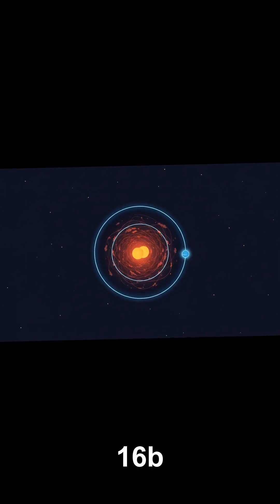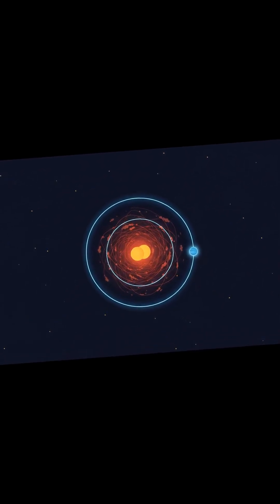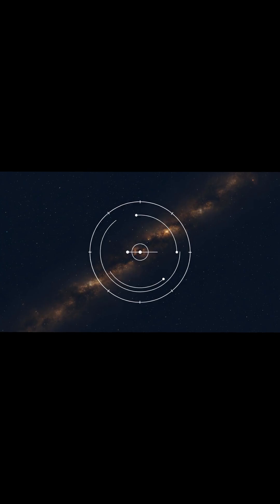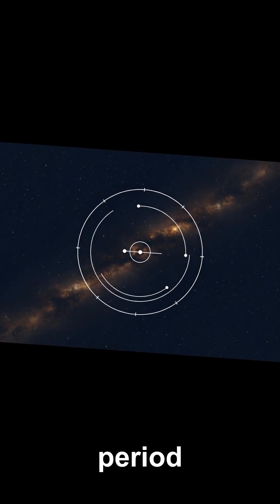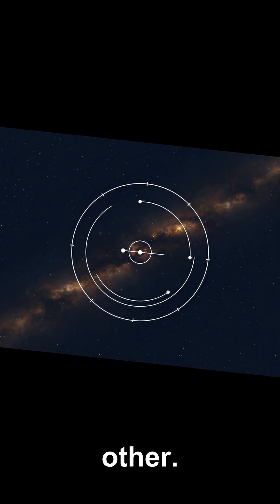When Kepler-16b was discovered, astronomers realized the planet sits in a gravitational sweet spot. Its orbital period is almost exactly seven times the orbital period of its two suns around each other.